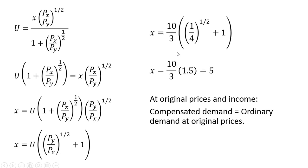Let's evaluate the compensated demand for good X at our utility level of 10/3, with price of good Y equal to 1 and price of good X equal to 4. The compensated demand for good X equals 5. So at the original prices and income, the compensated demand equals the ordinary demand.